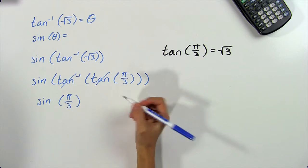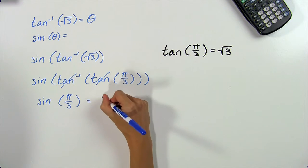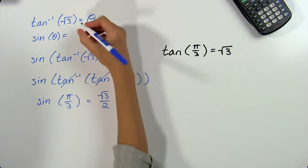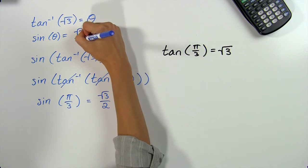Using our basic trig values again, we know that the sine of pi thirds is equal to the square root of 3 over 2. So the sine of theta is the square root of 3 divided by 2.